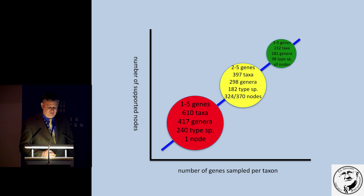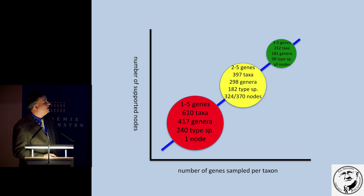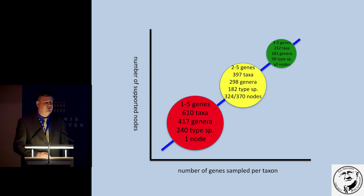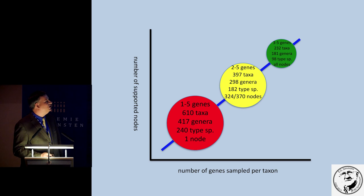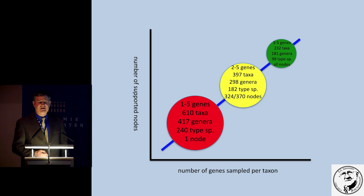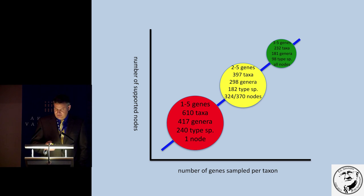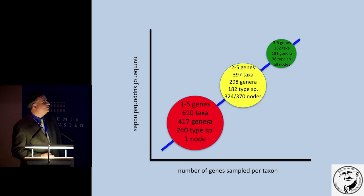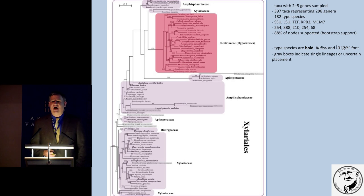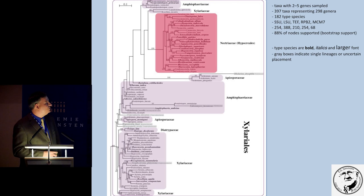The first data set is probably appropriate for answering question one when you are only interested in relationships at the tips. The next two data sets are more appropriate for answering question two about higher level relationships between families and orders. I was faced with a decision: show the two-to-five gene tree or the three-to-five gene tree? I decided to show both trees and talk about them very, very fast.